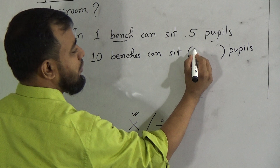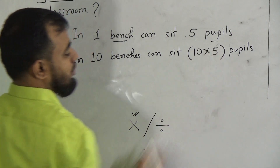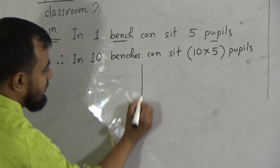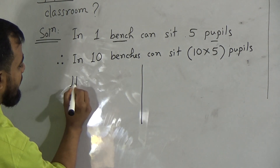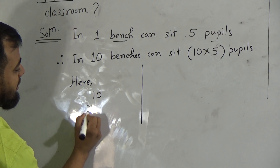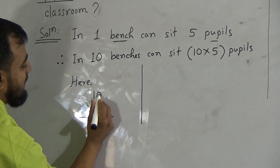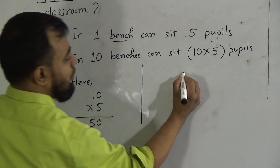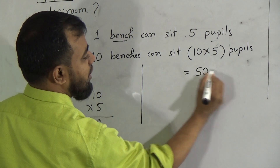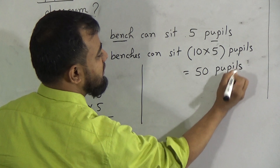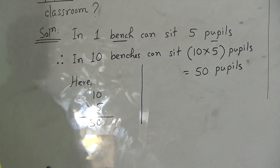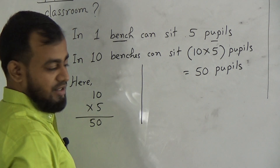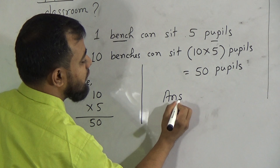So we write down 10 multiplied by 5. Now we do the rough work: 10 multiplied by 5 — 5 zeros are 0, 5 ones are 5, that means 50. When you multiply 10 by 5 it is 50. We write down 50 people. That means, my dear students, there are 10 benches and in total in that classroom 50 people can sit. So our answer is 50 people.